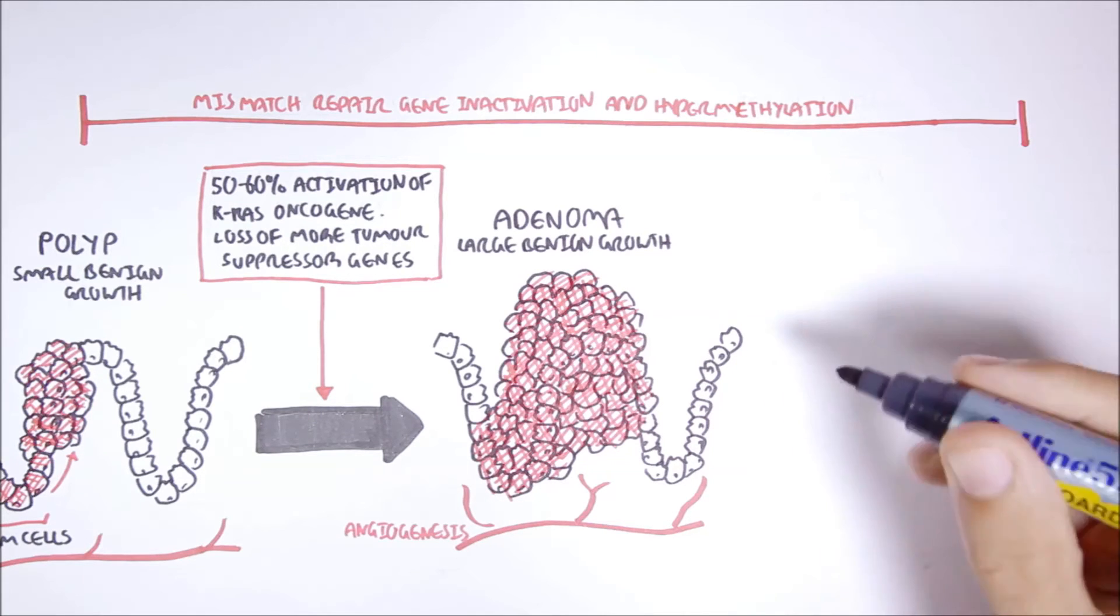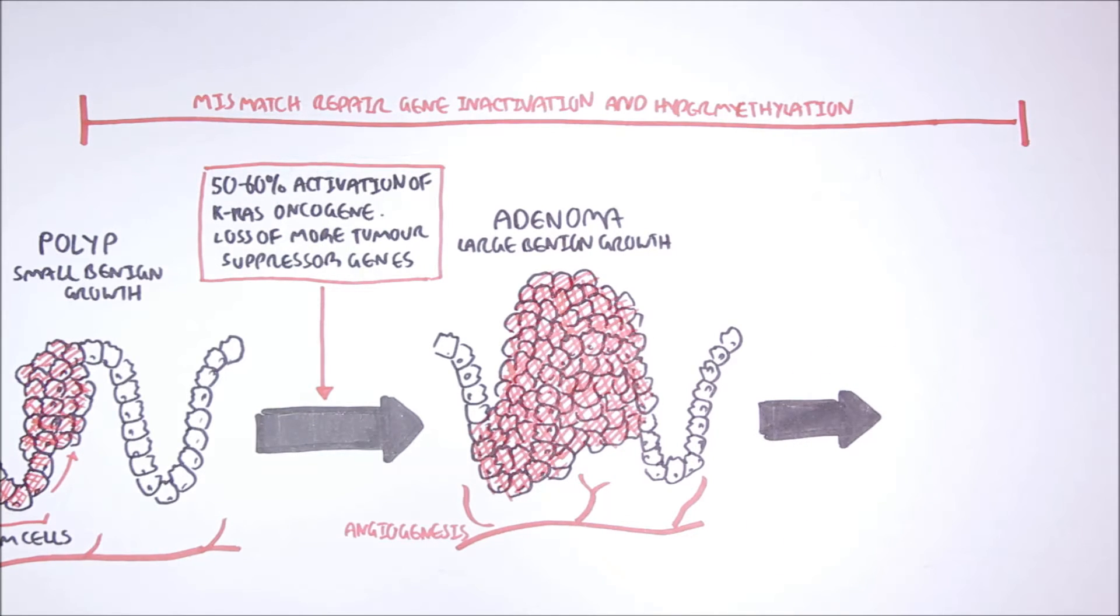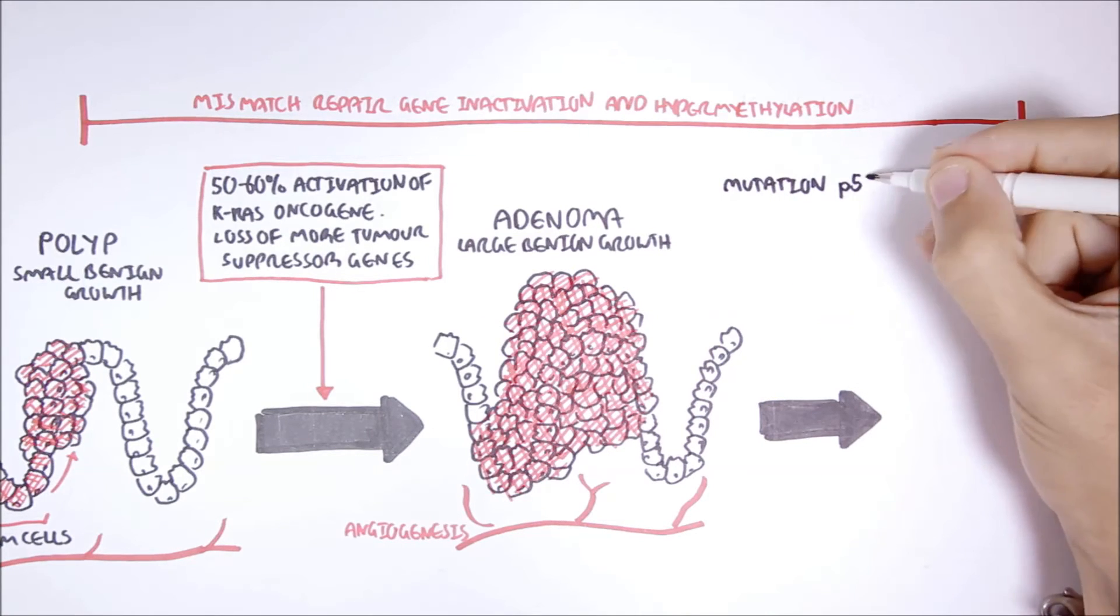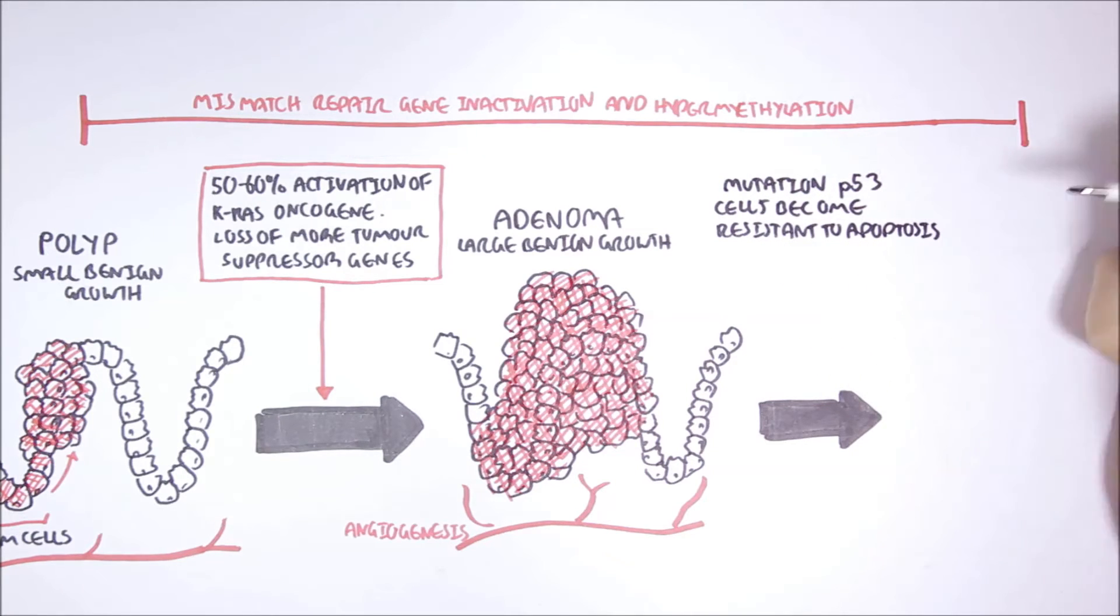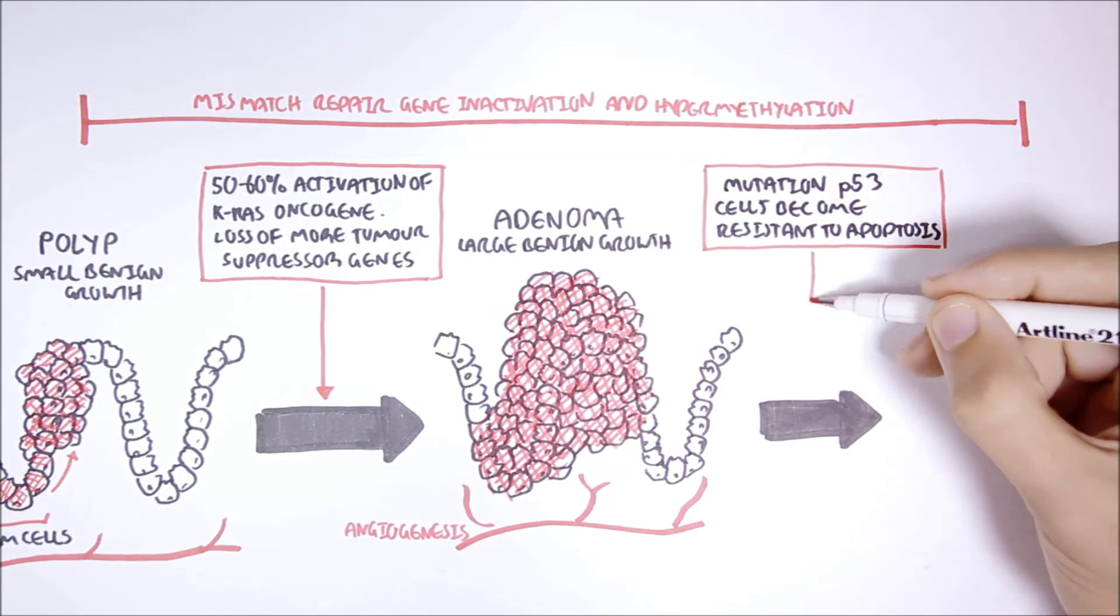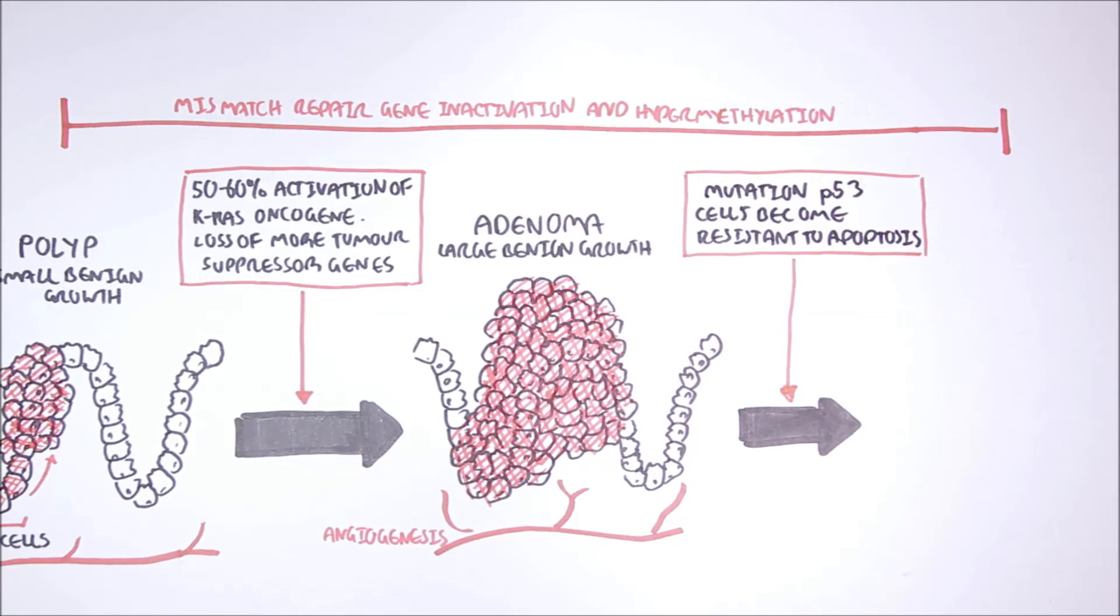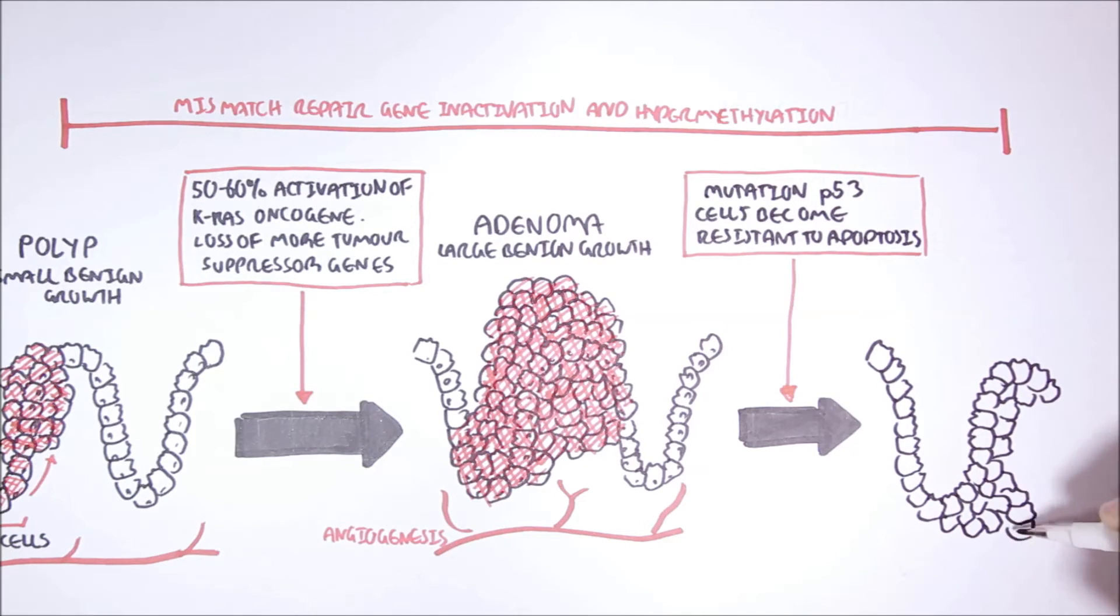A mutation in the TP53 gene tends to occur later in colon carcinogenesis. This mutation will cause resistance of cancer cells to apoptosis. So, more cells will divide, and less will die.